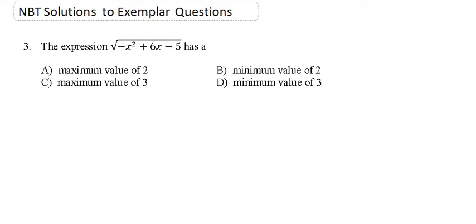Alright, so the expression minus x squared plus 6x minus 5, all square rooted, has either a maximum or a minimum value.